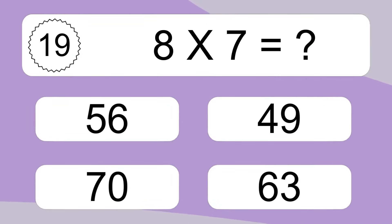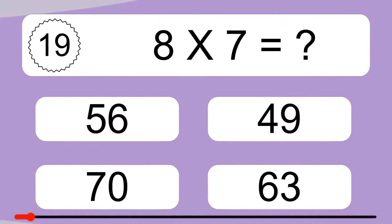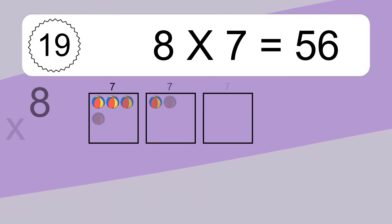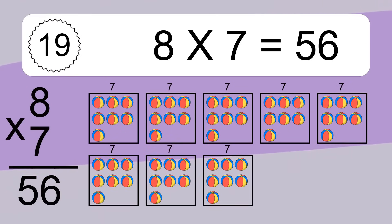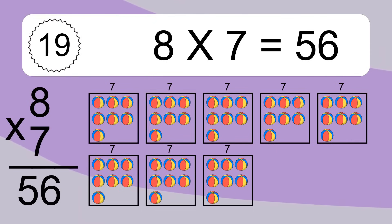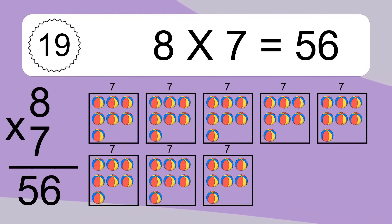8 times 7 equals what? 8 times 7 equals 56. We have 8 boxes and each box has 7 colorful balls inside. If you count all the balls in all the boxes together, you will have 8 times 7 balls. This equals 56 balls.